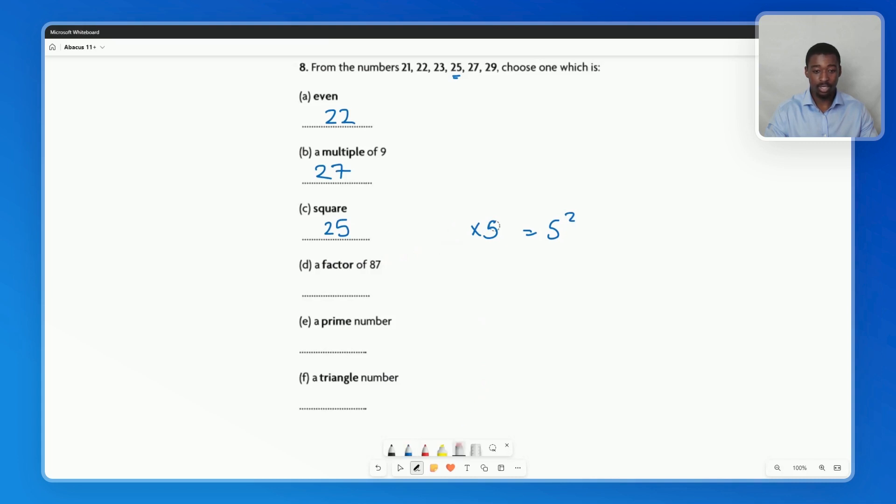Then we have D, a factor of 87. So now factor - factors go down. For this we're trying to work out the numbers that go into 87. So if we have 87, what numbers can we multiply together to give us 87? Well, it could actually be 29 and 3 because 20 times 3 is 60 and 9 times 3 is 27, and 60 plus 27 is 87. So here we know that 29 is a factor of 87 because 29 goes into 87 three times.